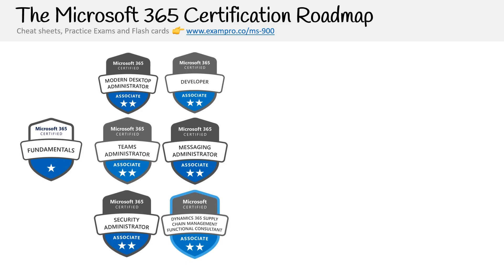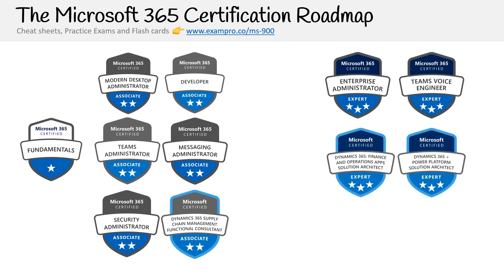After that, we have the associate-level certifications such as the Modern Desktop Administrator, Teams Administrator, Developer, or Security Administrator — it's really up to you to choose which field you're interested in. A common route would be taking the Modern Desktop Administrator at the associate level, then moving to the Enterprise Administrator at the expert level. It's also common to take multiple associate-level certifications to ensure a wide range of knowledge for possible career openings.